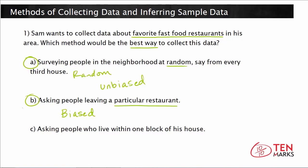Now let's take a look at this last one. Sam says he's going to ask people who live within one block of his house. This is not representative of the entire neighborhood because it's only one area. People living in a certain area may like one restaurant or type of food more than others just because it's closer. So the best method for Sam to get unbiased and representative data is option A — he should survey people in the neighborhood at random from every third house.